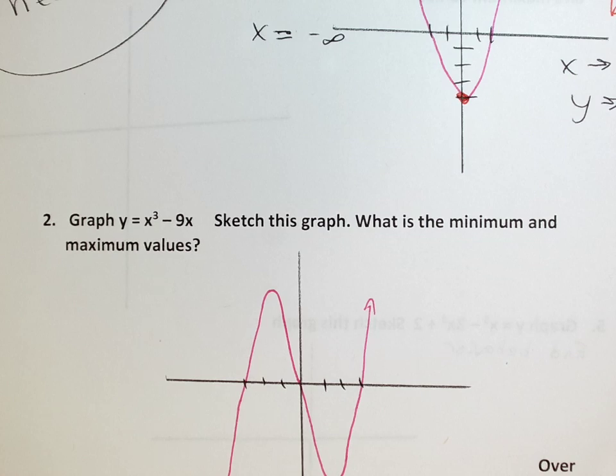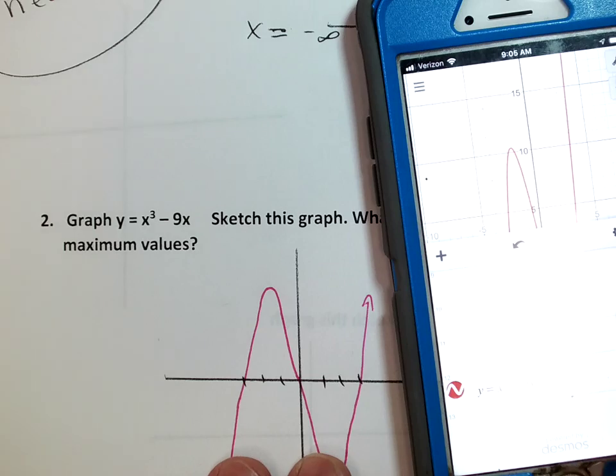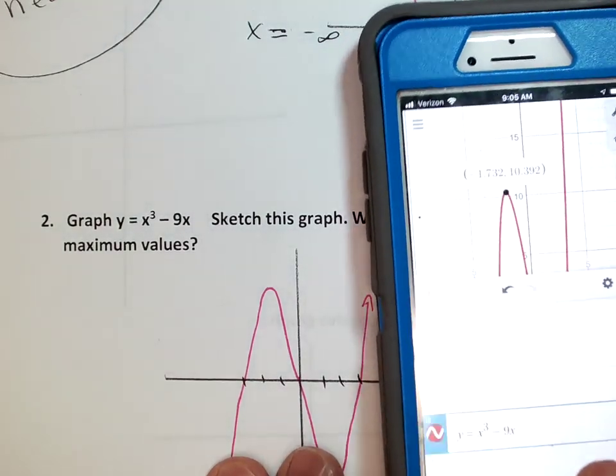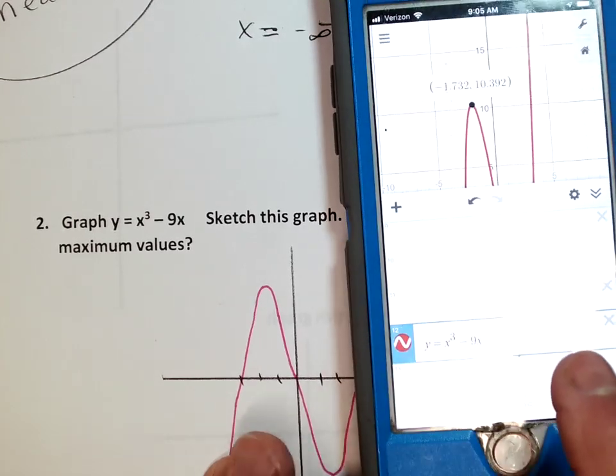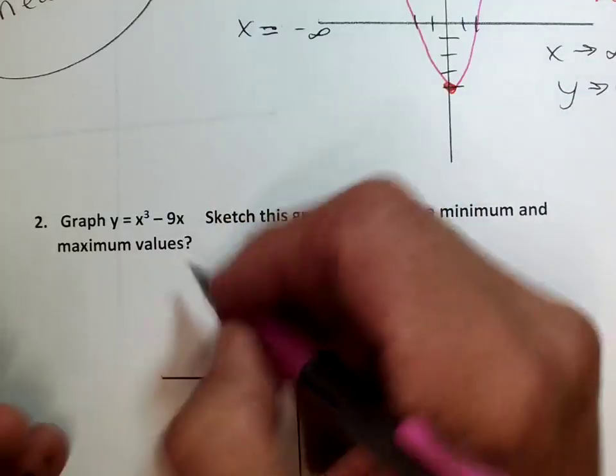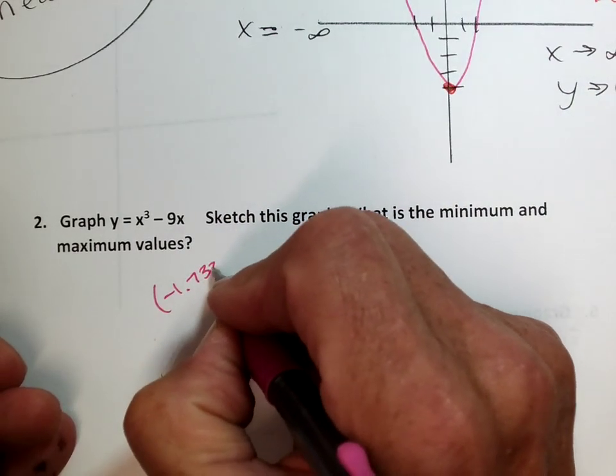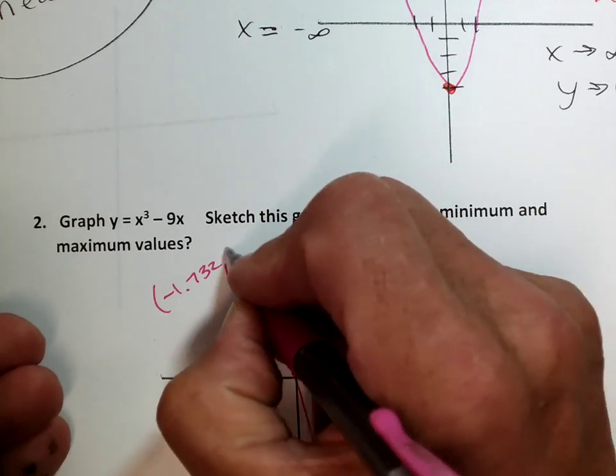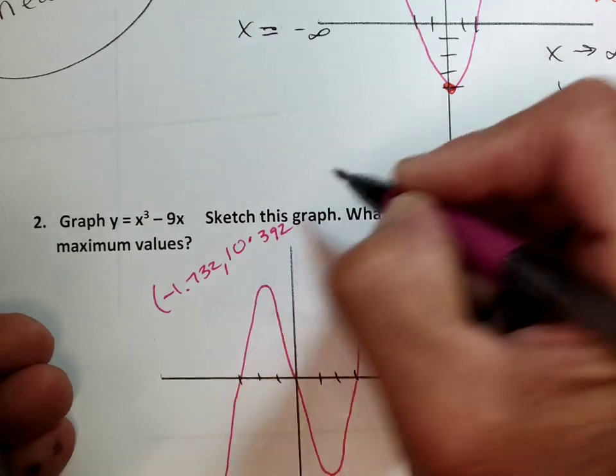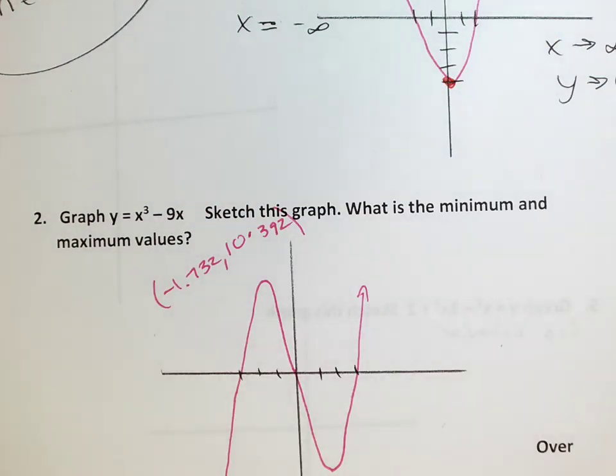It is an odd function, okay? It's called an odd function. First one was an even function. Okay, this is definitely an odd function, okay? What's the minimum and maximum values? Well, the cool part about Desmos is you can tap on it, okay? I like Desmos. So there's my maximum. You don't have to do anything fancy. Just tap on it.